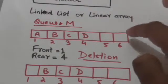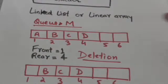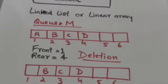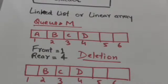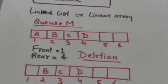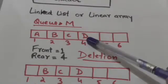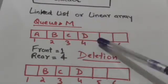This is the array representation of queue M. The lower bound of array M is 1, and the value of variable front is 1, which means the element at index 1 in array M is the front element of queue M. Therefore A is the front element of queue M. The value of variable rear is 4, which means the element at index 4 in array M is the rear element of queue M — that is, D is the rear element.